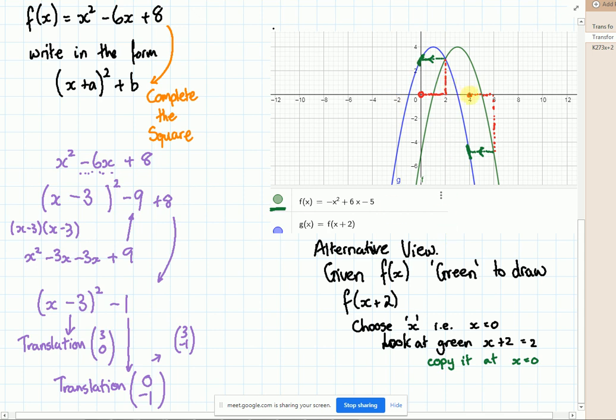Second example, let's say x equals 4. I look forward two places, look at what the green graph is doing, I copy it at x equals 4.